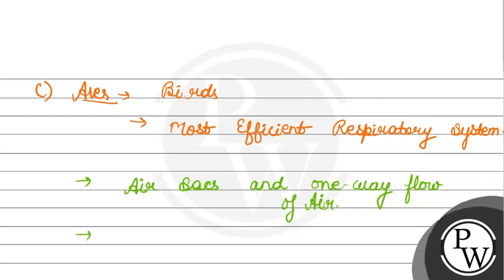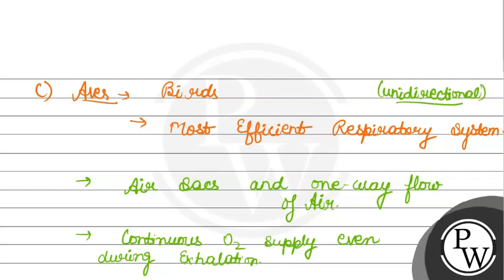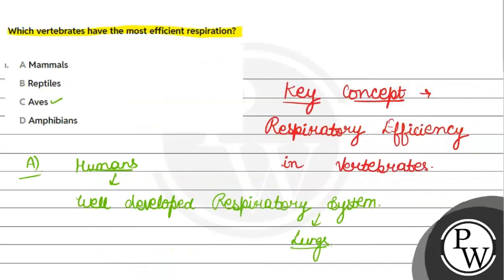What happens in this? Because it is unidirectional, they have continuous oxygen supply even during exhalation. In that time, oxygen directly enters because it is one way flow. So, this is why their respiration is efficient. Because they fly. So, they have unidirectional flow of air. And they get a continuous supply of oxygen. So, option third, Aves is correct.